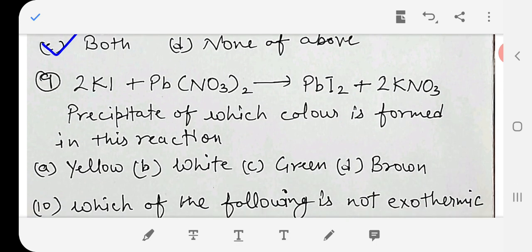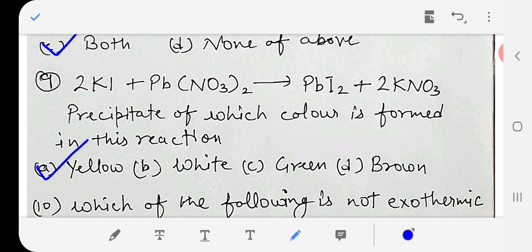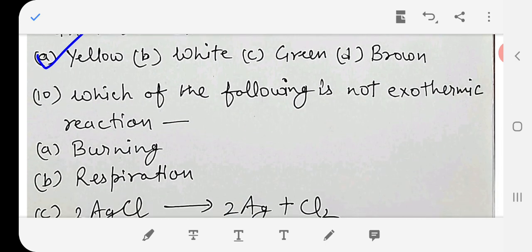Potassium iodide and lead nitrate gives lead iodide and potassium nitrate. Precipitate of which colour is formed in this reaction? The answer is yellow. Yellow colour precipitate forms of lead iodide.